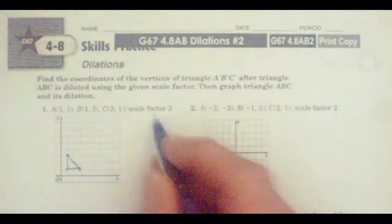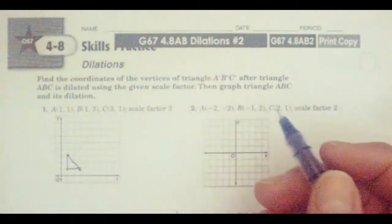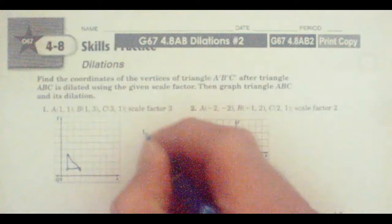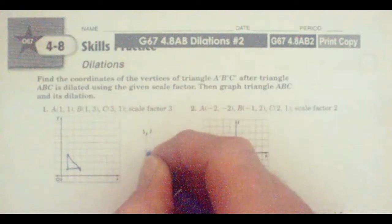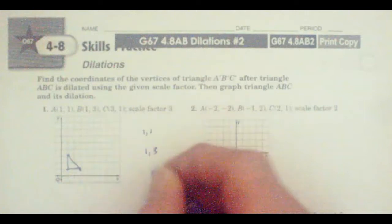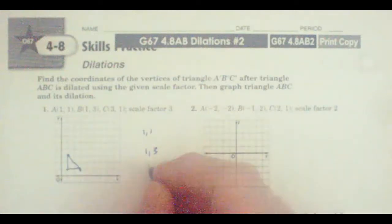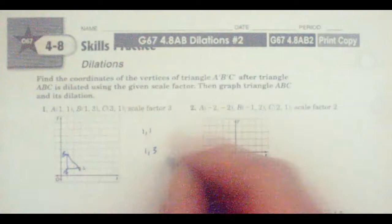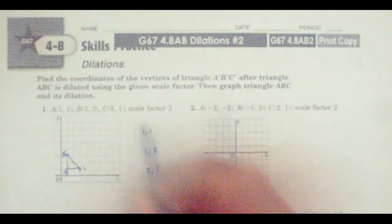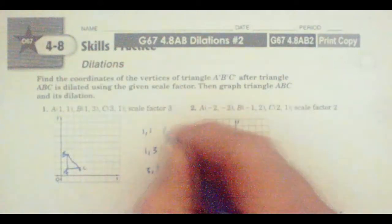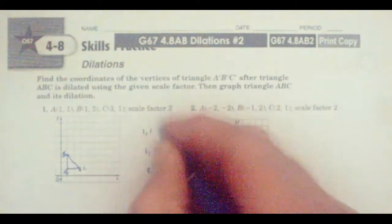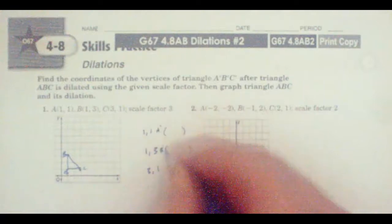Now we're going to use a scale factor of 3. We've got 1, 1, we've got 1, 3. We're going to use a scale factor of 3, so we're going to multiply each coordinate by 3. And so this is going to be A prime, B prime, and C prime.